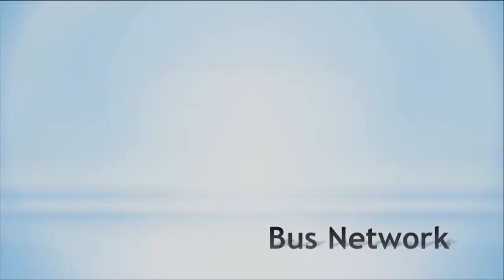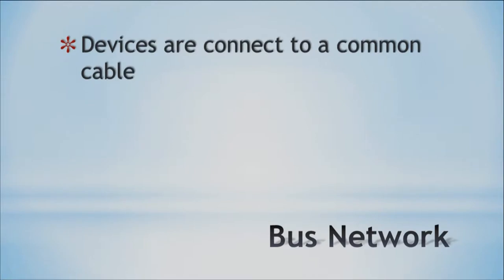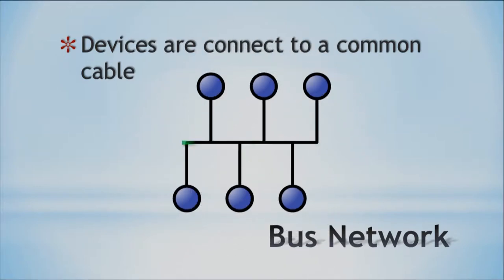The first topology we have is the bus network. Basically, all devices are connected to a common cable. In this topology, the blue dots are our devices, and the green line is the common cable that each device connects to. This is an older style network. We have that common bus that each device needs to connect to.